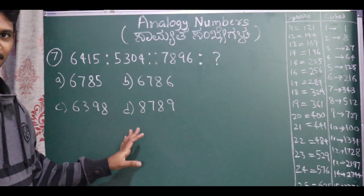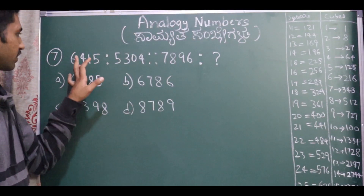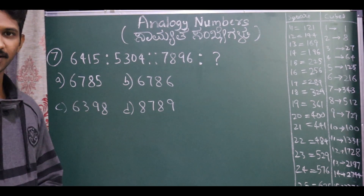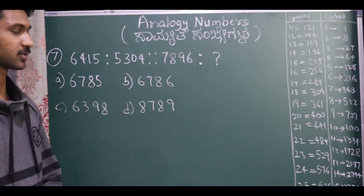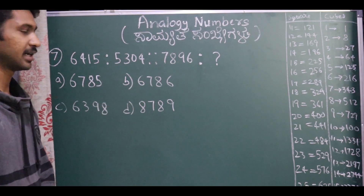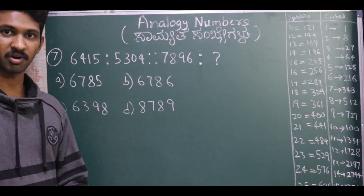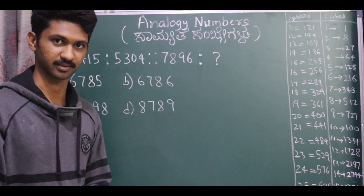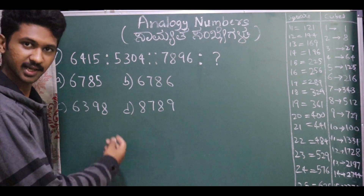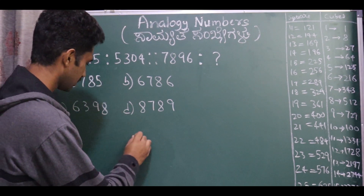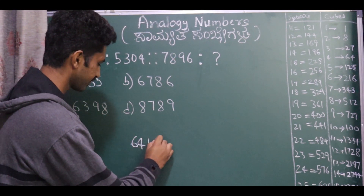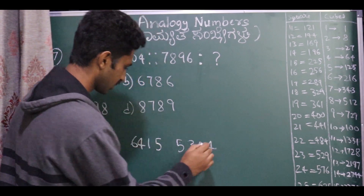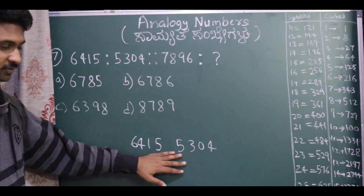This next question is different because we have 4-digit numbers. Usually we don't have 3-digit or 2-digit numbers here, so there are 4 digits. This type of question tests observational pattern analysis skills. The first two numbers are 6415 and 5304.